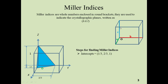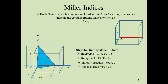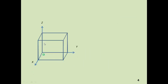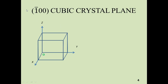So the intercepts are 1/3 at the x-axis, 2/3 at the y-axis, and 1 at the z-axis. The next step is to take the reciprocal of these intercepts, giving you 3, 3/2, and 1. Then simplify the fractions to get 6, 3, 2. Remove the commas and you get the Miller indices (632) for this plane.